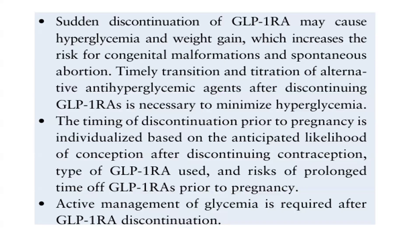When discontinuing GLP-1 receptor agonists, blood sugars will increase and the patient may experience weight gain, which can further increase the risk of congenital malformations and spontaneous abortion. Timely transition and titration of alternative anti-hyperglycemic agents after discontinuation is essential. The timing of discontinuation prior to pregnancy is individualized based on anticipated likelihood of conception, type of GLP-1 agent used, and risk factors. Active glycemic management after discontinuation is clearly required as described in the 2025 guidelines.